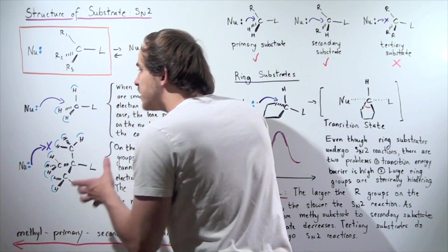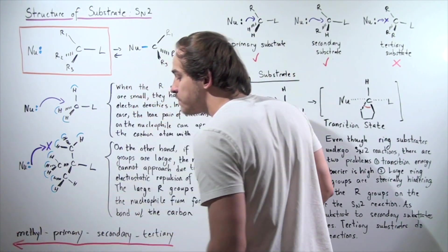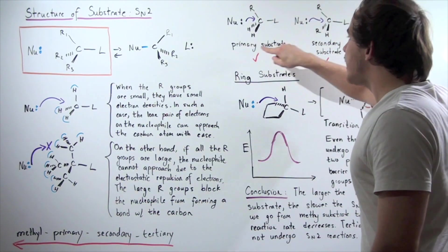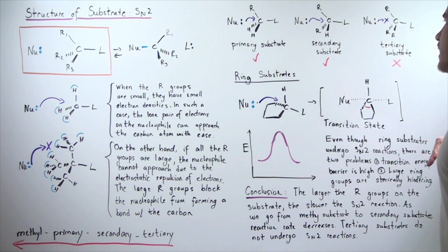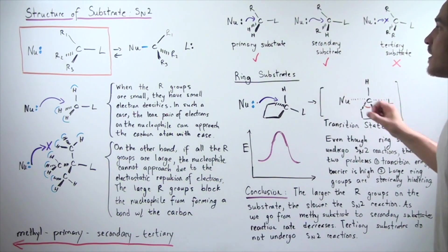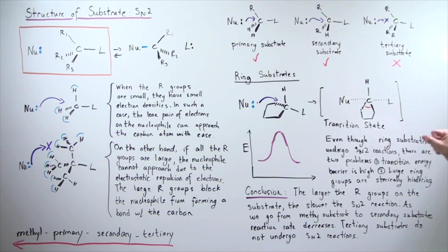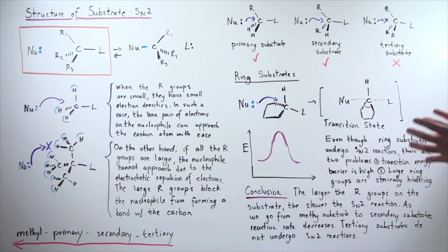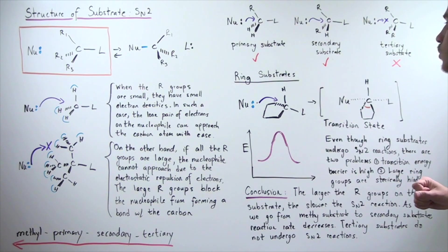If we have a methyl substrate, our reaction rate will be the quickest. Tertiary will not occur at all. Secondary will be slower than primary and methyl. Primary will be slower than methyl but faster than secondary. If we have a primary substrate, the nucleophile will be able to get to this carbon. If we have a secondary and the R group is relatively small, this pair of electrons will be able to get to the carbon, but slower. In our tertiary case, no matter how our nucleophile tries to get to that carbon atom, it will not be able to because there's too much electrostatic repulsion between the electrons on these R groups and the electrons on the nucleophile.